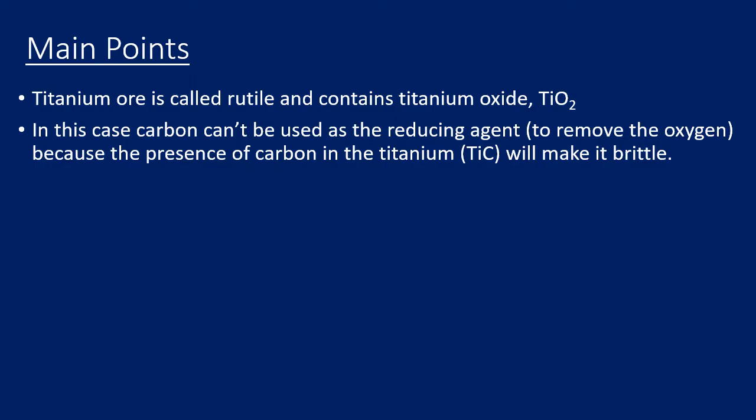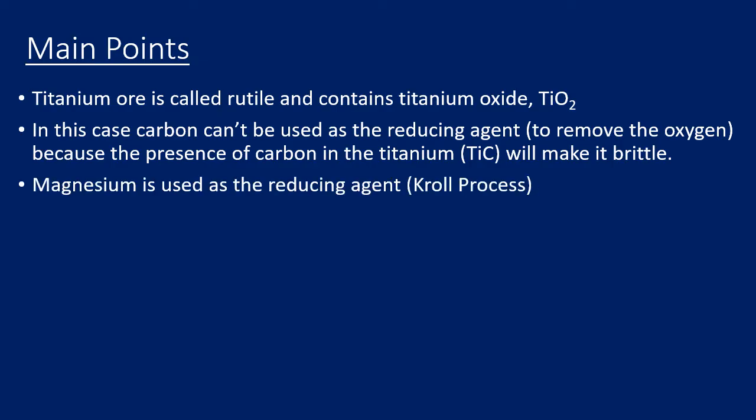Usually in other processes, such as extracting iron from iron oxide, we can use carbon as a reducing agent. But in this case carbon can't be used as a reducing agent because the presence of carbon in the titanium actually makes it brittle, which means it's not going to be useful. So magnesium is used instead of carbon as the reducing agent — the term reducing agent here means to remove the oxygen.